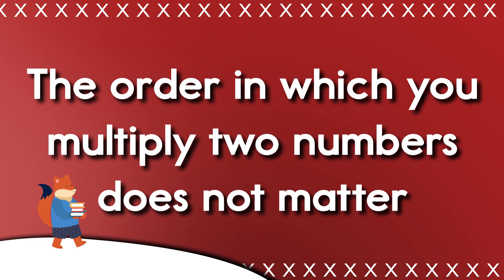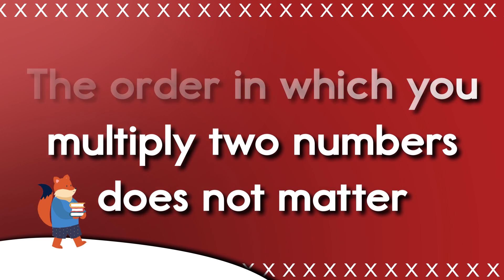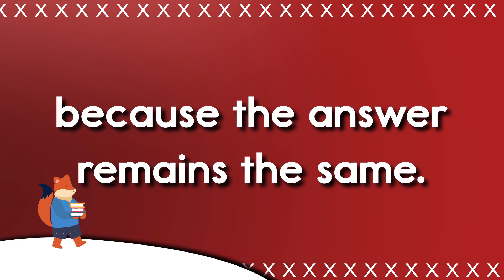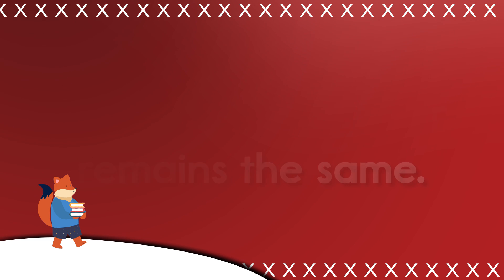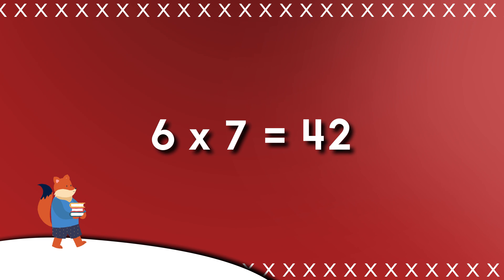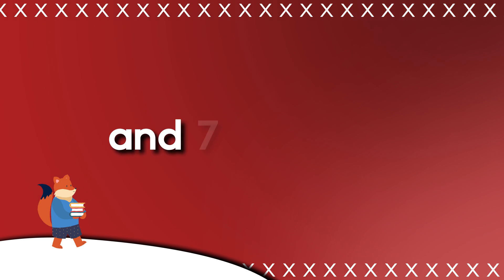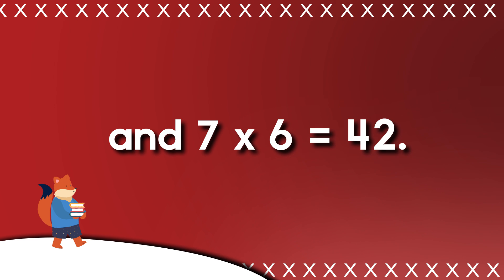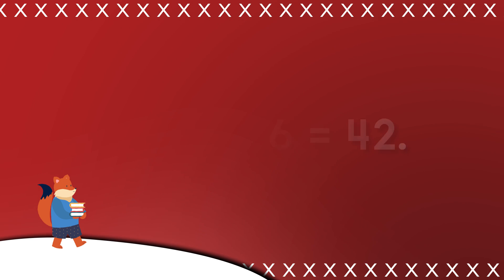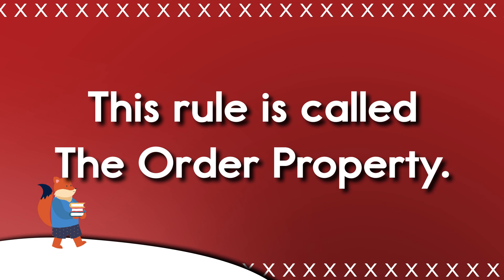The order in which you multiply two numbers does not matter, because the answer remains the same. For example, 6 times 7 equals 42, and 7 times 6 equals 42. This rule is called the order property.